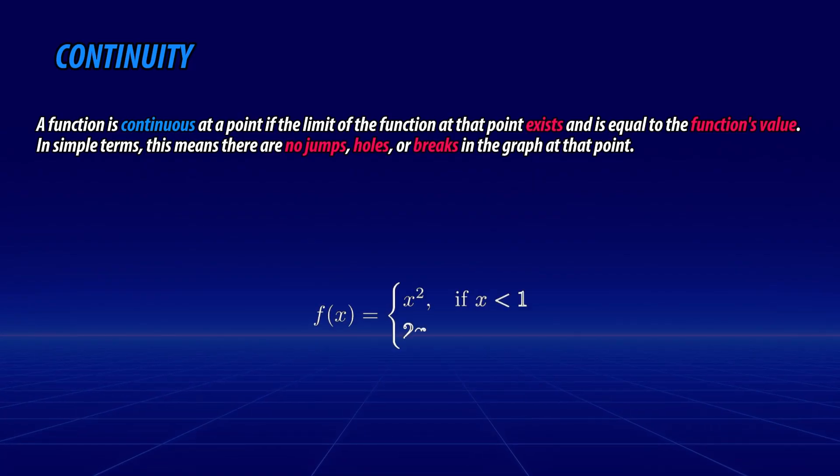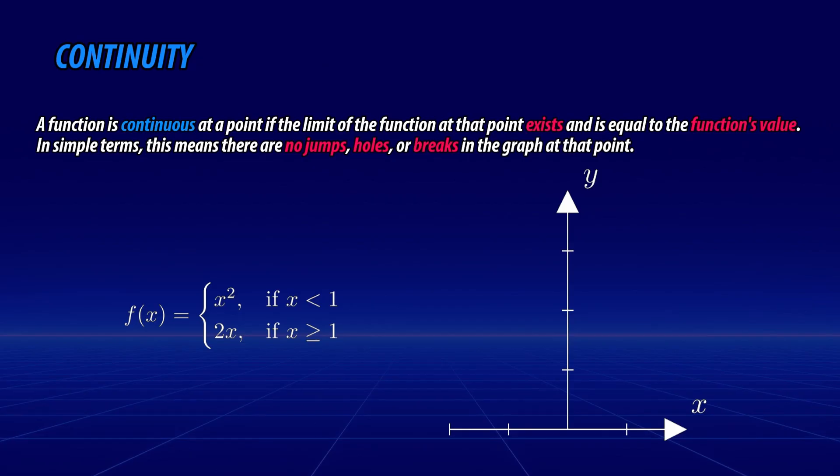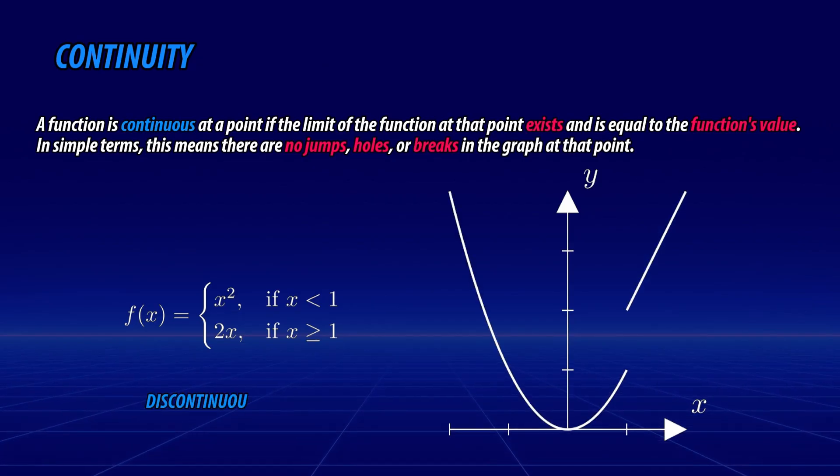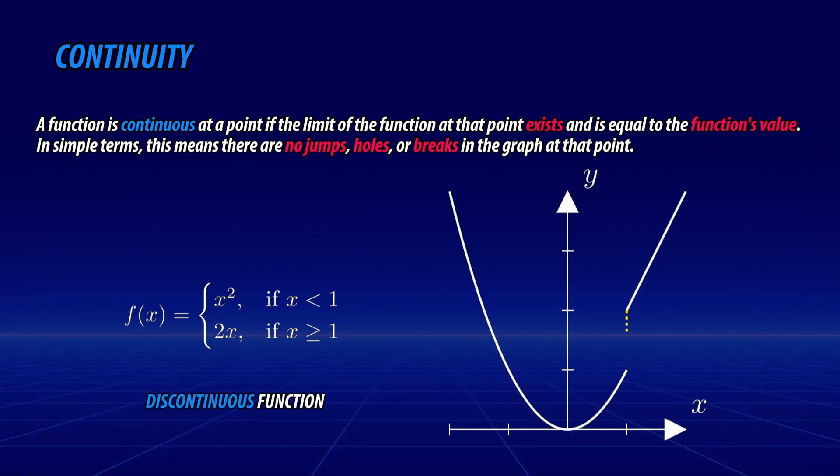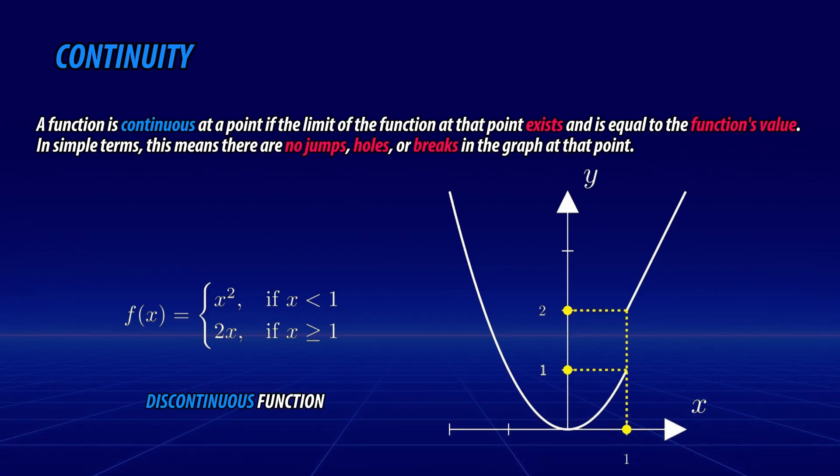Not all functions are continuous. In some cases, functions may approach different values from the left and the right. This is known as a discontinuous function and it requires us to evaluate limits from both sides. These are called one-sided limits. For example, looking at this function, at x equals 1 we would need to evaluate both the left-hand limit and the right-hand limit to check for continuity.